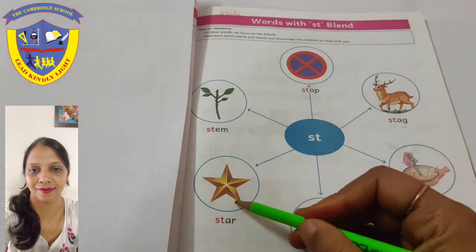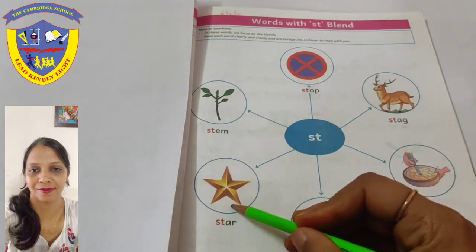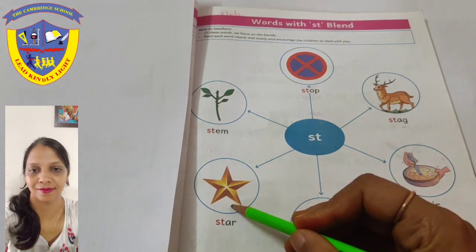Next is: St, Ir — Star. Star means Sitara.